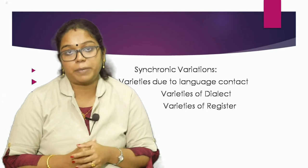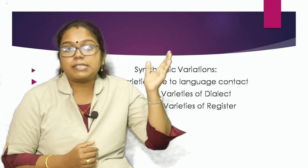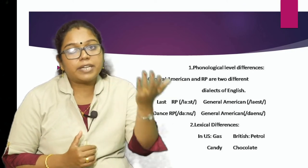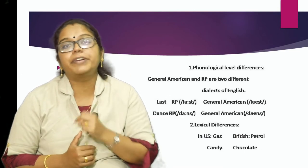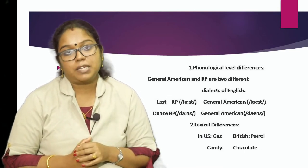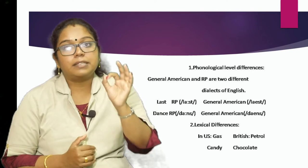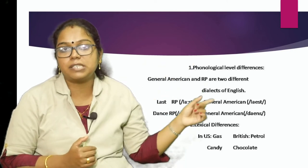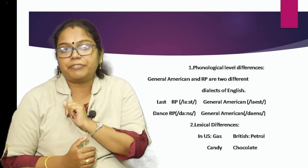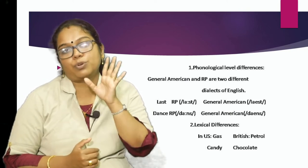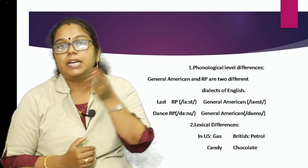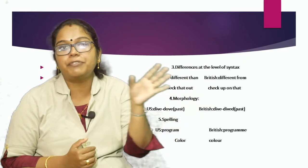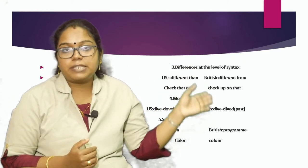Within a given language we have a number of dialects. Between two dialects there may be grammatical, lexical, and phonological differences even though they may share the same oral system of language. At the phonological level, for example, General American and RP are two different dialects of English — 'last' in RP is pronounced 'last' and in General American 'last'. At the lexical level: in the US 'gas', in British English 'petrol'; in the US 'candy', in British English 'chocolate'. At the syntactic level: in the US 'different than', in British English 'different from'.